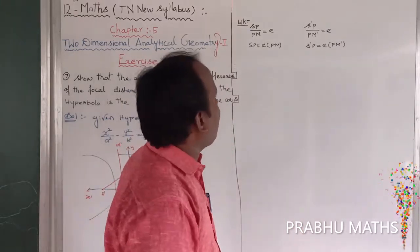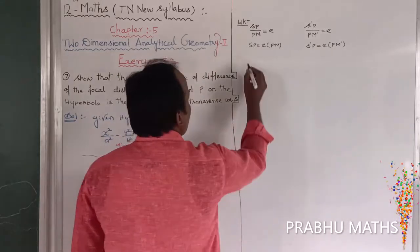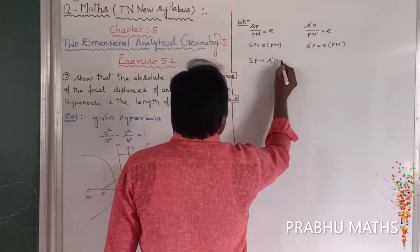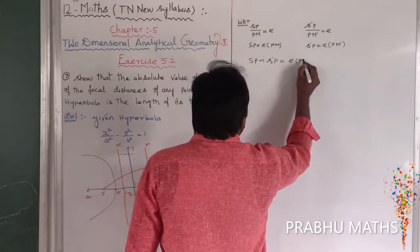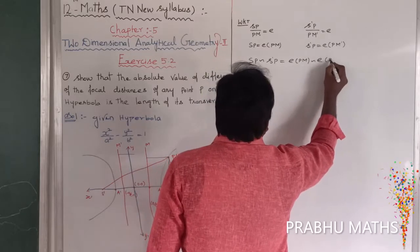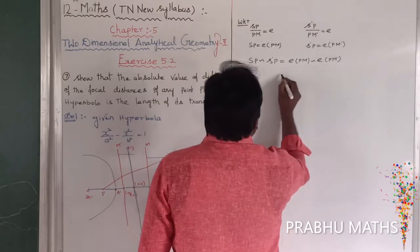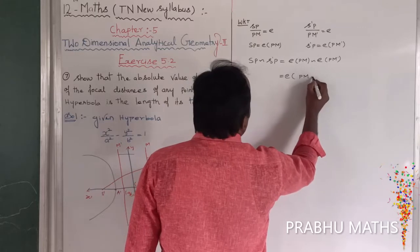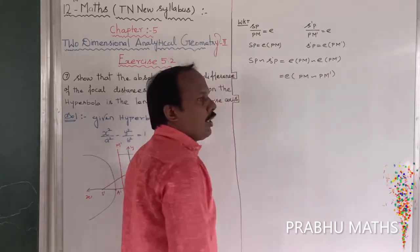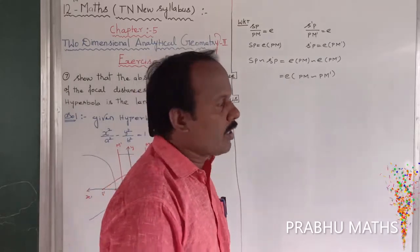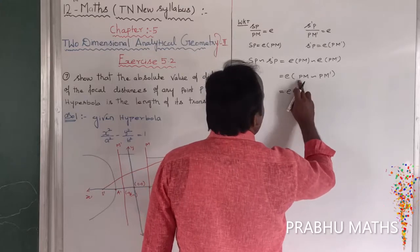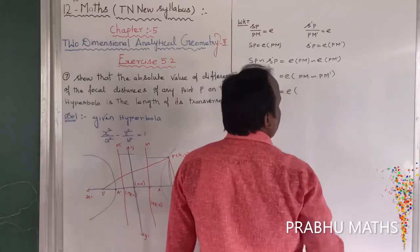Next, the difference between SP and S dash P. So SP minus S dash P is equal to e into PM minus e into PM dash. E is a common value, so it is e into (PM minus PM dash). Difference means it is going to be minus, so that is equal to e into PM minus PM dash.